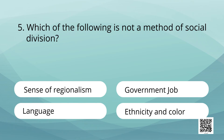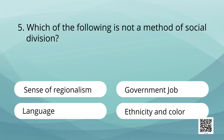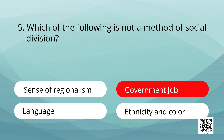Which of the following is not a method of social division? Options: 1. Sense of regionalism. 2. Government job. 3. Language. 4. Ethnicity and colour. Answer is government job.